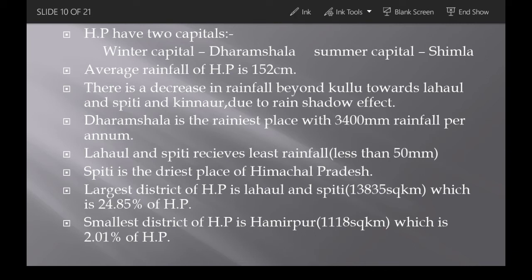Himachal Pradesh has two capitals: Shimla is the summer capital and Dharamshala is the winter capital. The average rainfall of HP is 152 centimeters. Dharamshala receives the highest rainfall in HP at 3,400 mm. Lahaul-Spiti receives the least rainfall — it is the driest district, and Spiti is the driest place, receiving less than 50 mm of rain.